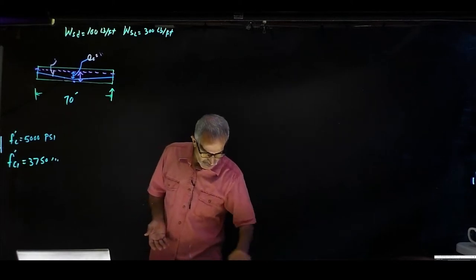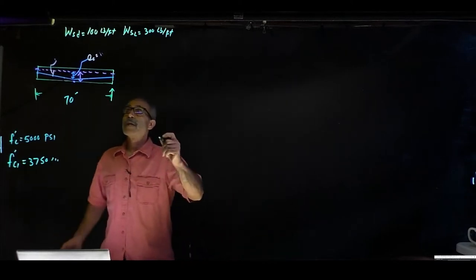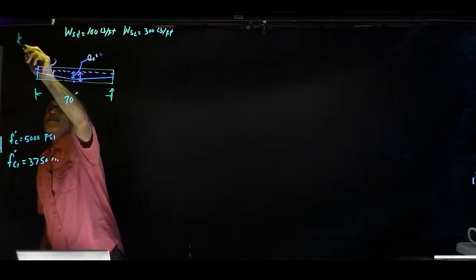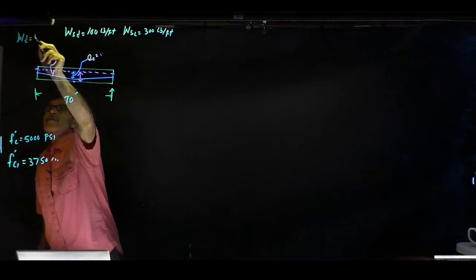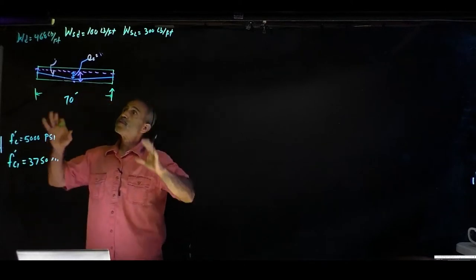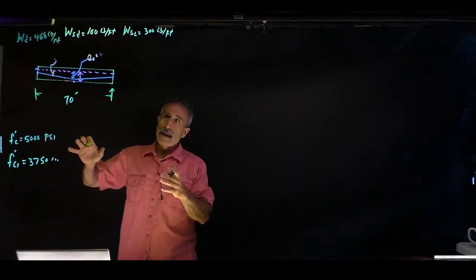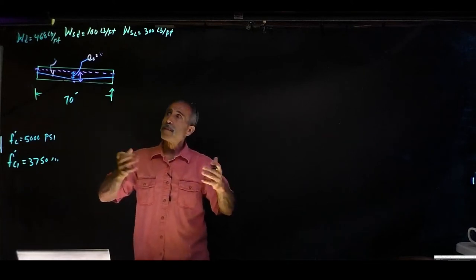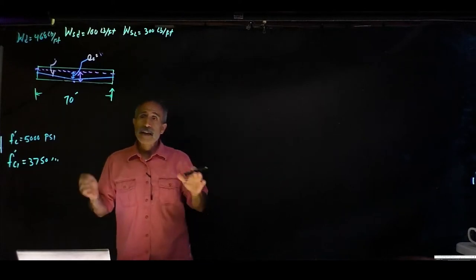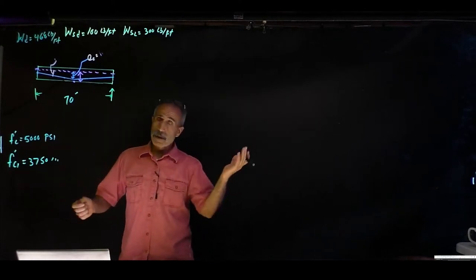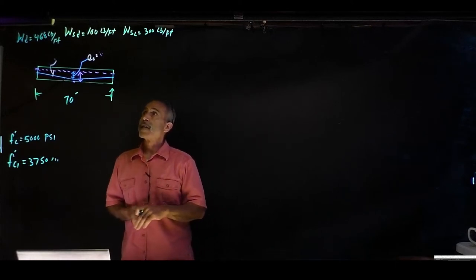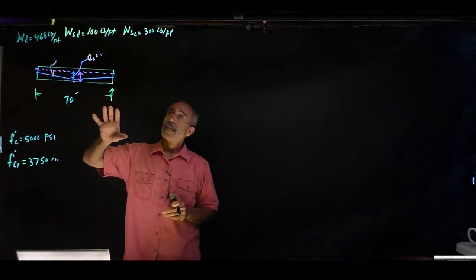So we set WD equal to 468 pounds per foot. You can assume any weight, but the problem is if you assume wrong, you do all the work and then have to redo it with the correct weight. Experienced designers just pick the size. So we assume 468 pounds per foot — now we have our loads and we're going to get to work.